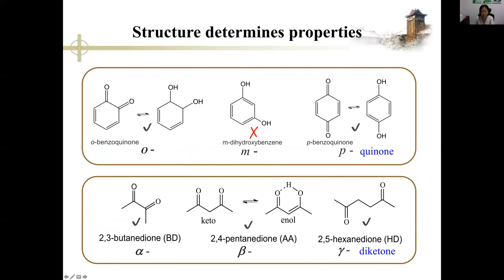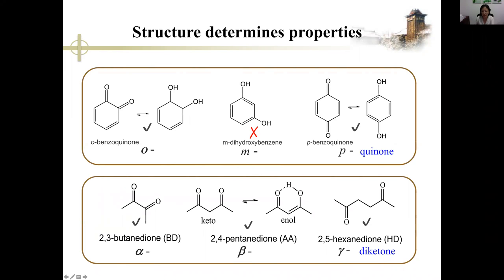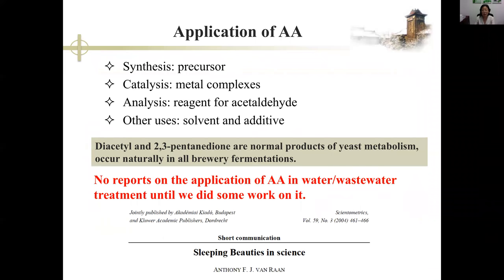In chemistry, structure determines properties. Comparing the structures of diketones with quinones, we can find some similarities. Here are the three diketones we have studied: 2,3-butanedione (BD), 2,4-pentanedione (AA), and 2,5-hexanedione (HD) — the three simplest alpha, beta, and gamma diketones. We pay special attention to AA because of its two tautomeric structures — the ketone and the enol. The enol structure is a good chelating agent and can complex with many transition metals.